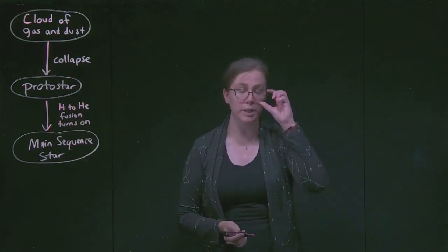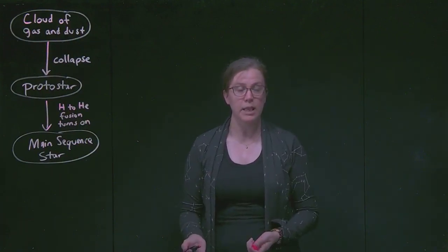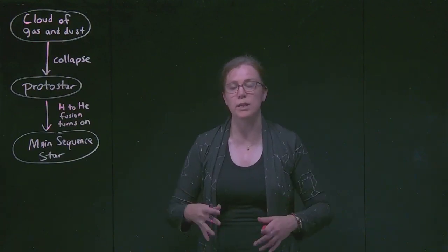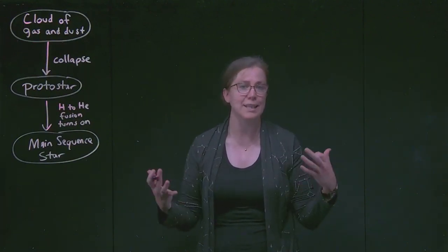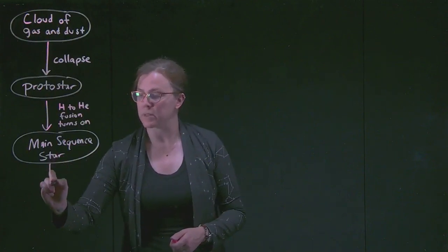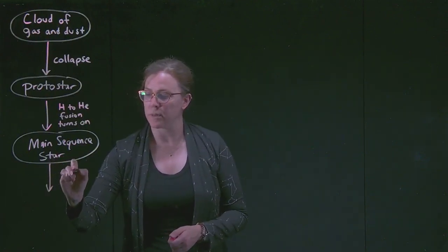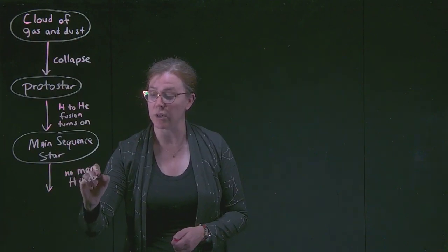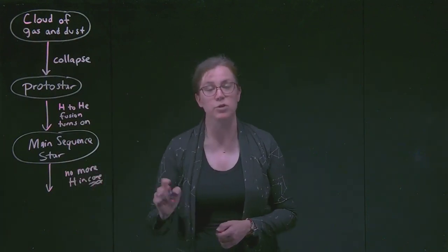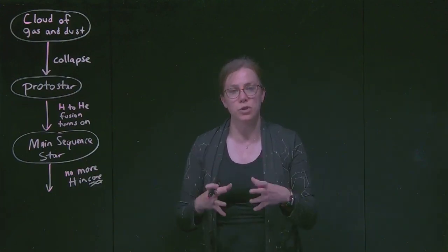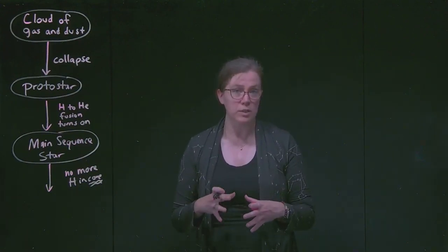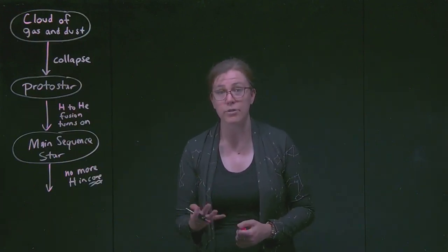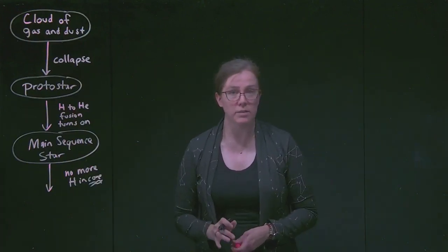A main sequence star will be 90% of a star's lifetime. In the process of turning hydrogen to helium, the core is filling up with helium, the star is shining with light and heat. But at some point, there is no more, or not enough, no more hydrogen in the core. There is still plenty in the outer layers, but there's no more hydrogen in the core. And so this star runs out of this nice balance between gravity and pressure that we called hydrostatic equilibrium, and it leaves the main sequence.